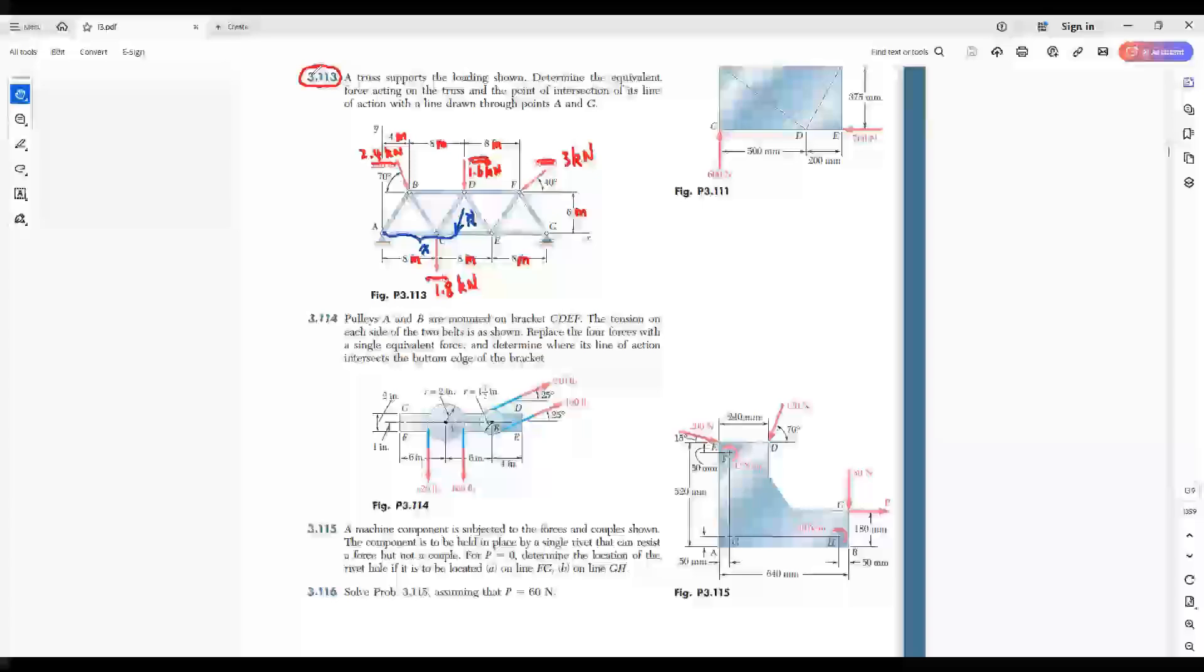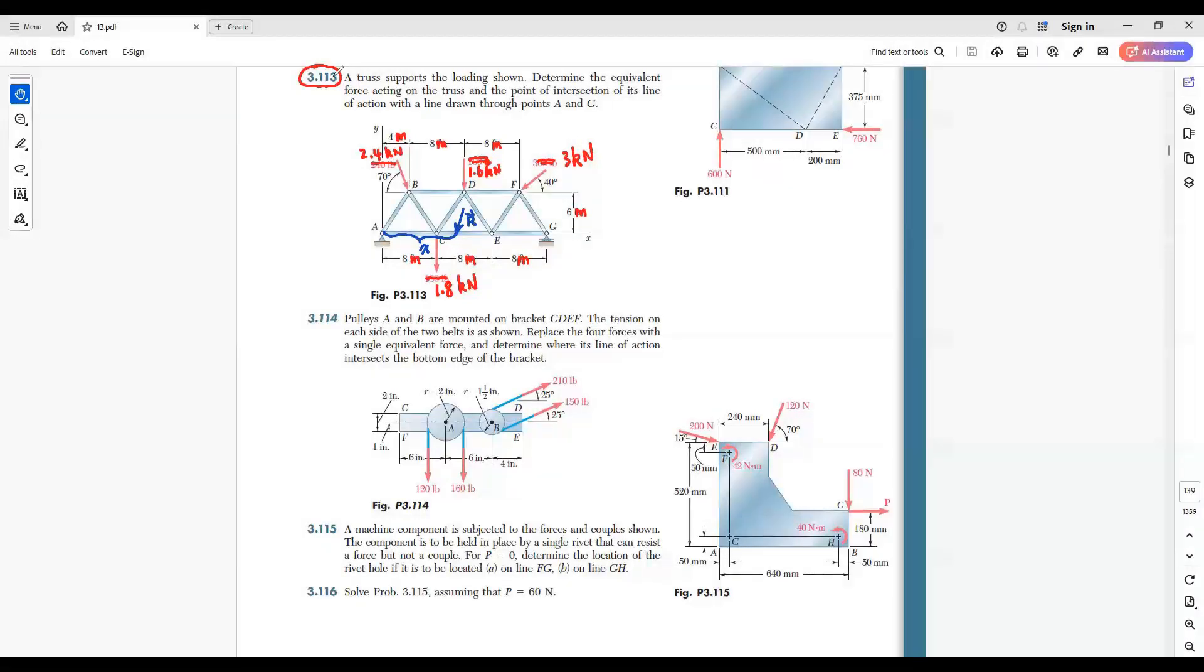Problem 3.113. A truss supports the loading shown in this figure. Determine the equivalent force acting on the truss and the point of intersection of its line of action with a line drawn through points A and G.